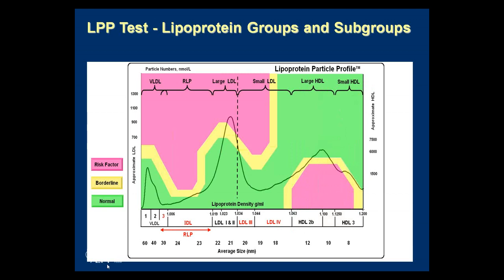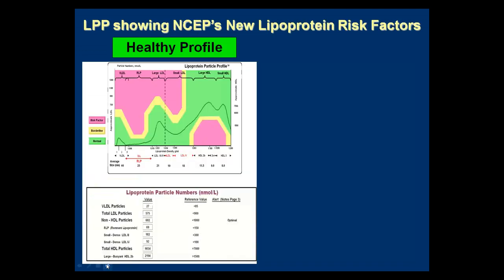I'm going to spend a fair amount of time talking about this graph to help you analyze it. Here's an example of a healthy profile — it's all in the green. We have low remnant lipoprotein (RLP), a buoyant LDL peak predominantly on the left side of the dashed line. A type A or buoyant LDL profile means less than 30% of the LDL peak is small — everybody has some small and some large, but if more than 25-30% is small, it's predominantly a small dense profile.